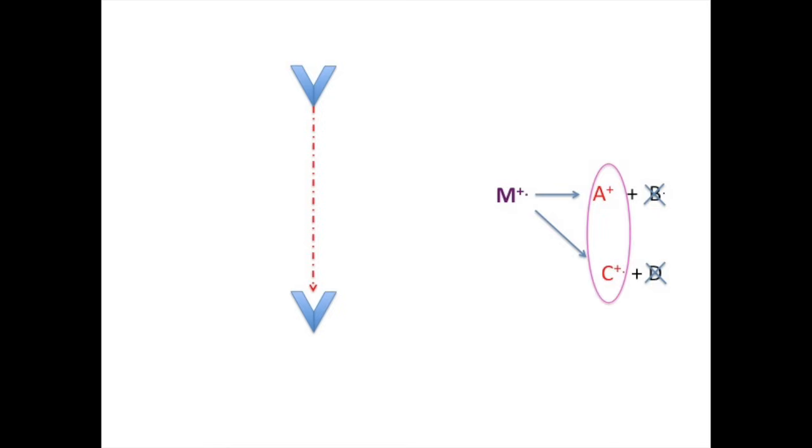Since all of our mass sorting strategies involve manipulating the charged fragments, we never are able to observe the neutral pieces directly. Our mass spectra will only show peaks from these charged fragments. If we are lucky, we will still be able to observe a signal from the original molecule or parent ion.